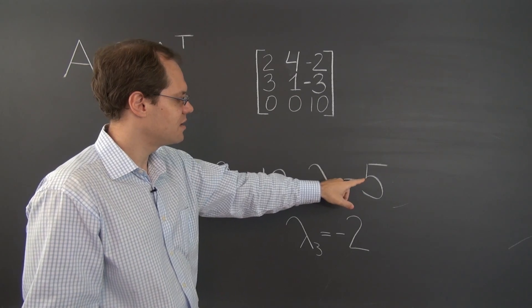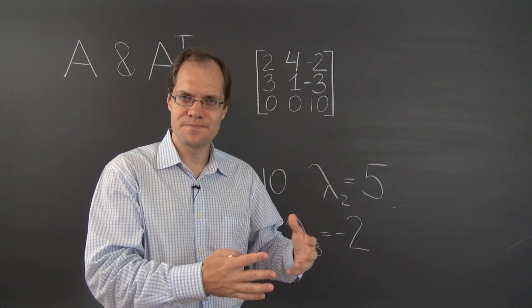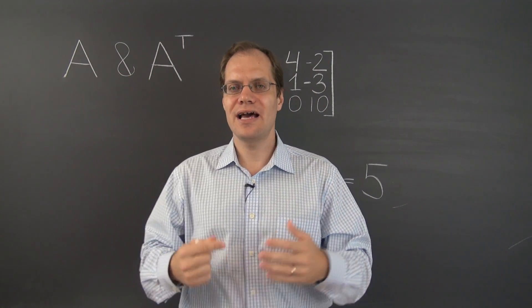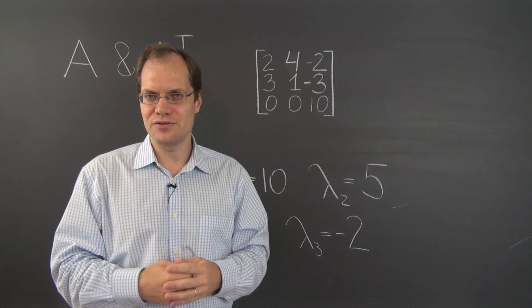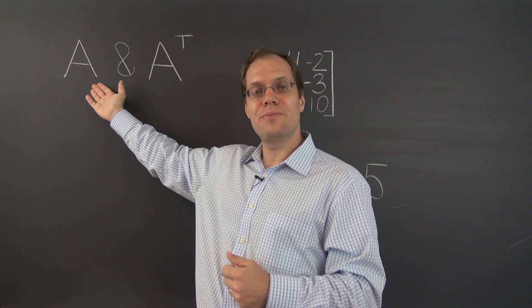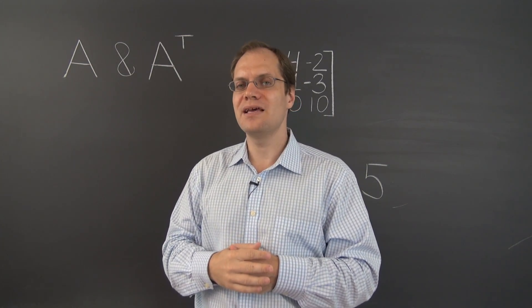And two of the eigenvalues came from the combinations of features we learned earlier and the property that A and A transpose have identical eigenvalues. So once again, this property on its own does not help us determine any of the eigenvalues. But in combination with other features, it does.